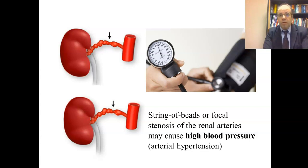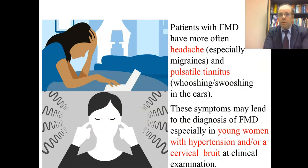A few examples of the consequences of FMD: string of beads or focal stenosis of the renal artery may cause high blood pressure — arterial hypertension — and untreated hypertension may lead to serious vascular complications. Patients with FMD also more often have headache, especially migraine and pulsatile tinnitus, often described as whooshing or swooshing in the ears. These symptoms may lead to the diagnosis of FMD, especially in young women with hypertension or a cervical bruit on clinical examination.